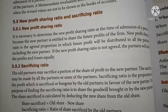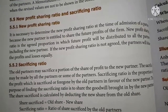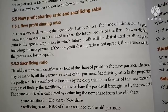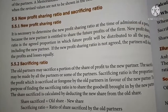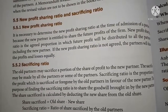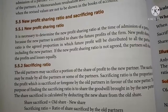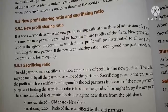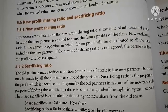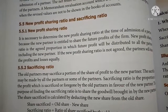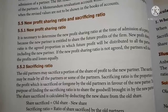If the new profit sharing ratio is not agreed, the partners will share profit and losses equally, including the new partner, for future profit. Sacrifice ratio: the old partners may sacrifice a portion of their share of profit to the new partner. The sacrifice may be made by all the partners or some of the partners. Sacrifice ratio is the proportion of profit which is sacrificed or foregone by the old partners in favor of the new partner. The purpose of finding the sacrifice ratio is to share the goodwill brought in by the new partner.